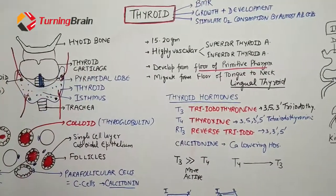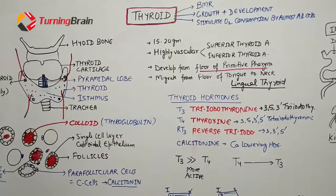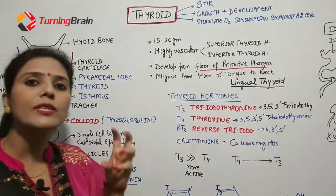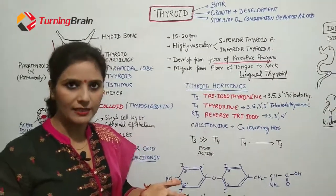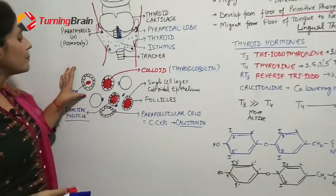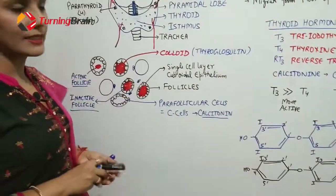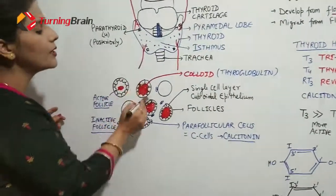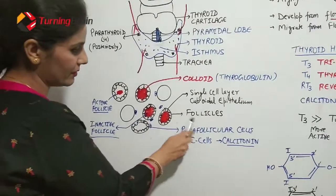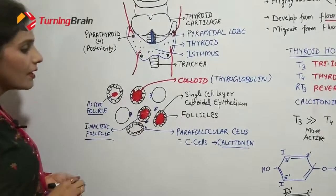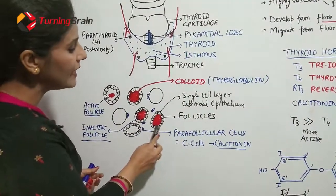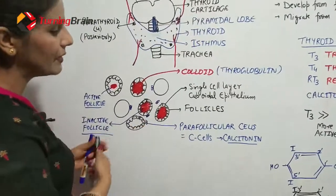If you look at the histology of a cut section of the thyroid gland, you will see many rounded, multiple follicles. These follicles make up the gland. Outside each follicle there is a single layer of cells — a single layer of cuboidal epithelium surrounding each follicle.